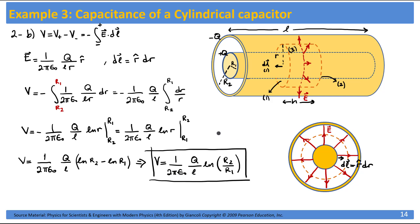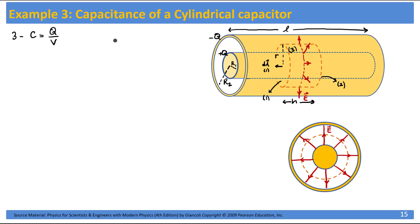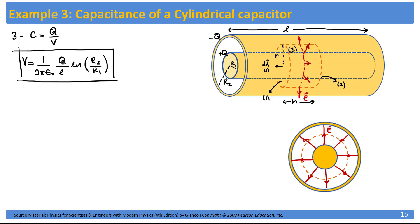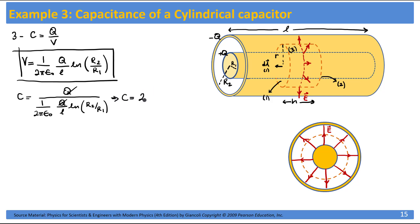Now the last step: plug V into the capacitance equation. C = q/V = q divided by [(1/(2πε₀)) × (q/l) × ln(r2/r1)]. The q's cancel, and we get the capacitance of a cylindrical capacitor: C = 2πε₀l / ln(r2/r1).